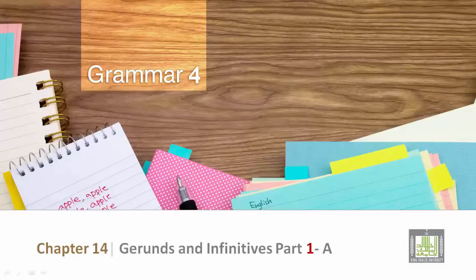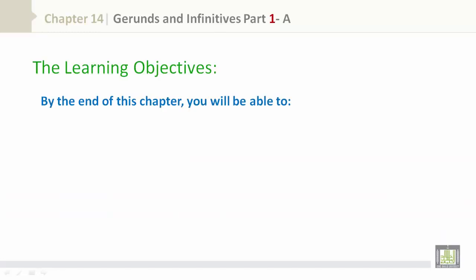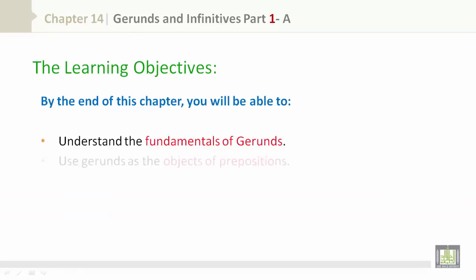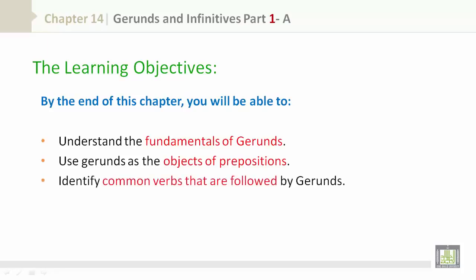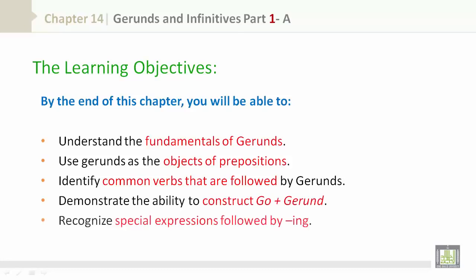Grammar 4, Chapter 14: Gerunds and Infinitives, Part 1. The learning objectives: by the end of this chapter you will be able to understand the fundamentals of gerunds, use gerunds as the objects of prepositions, identify common verbs that are followed by gerunds, demonstrate the ability to construct go plus gerund, and recognize special expressions followed by -ing.